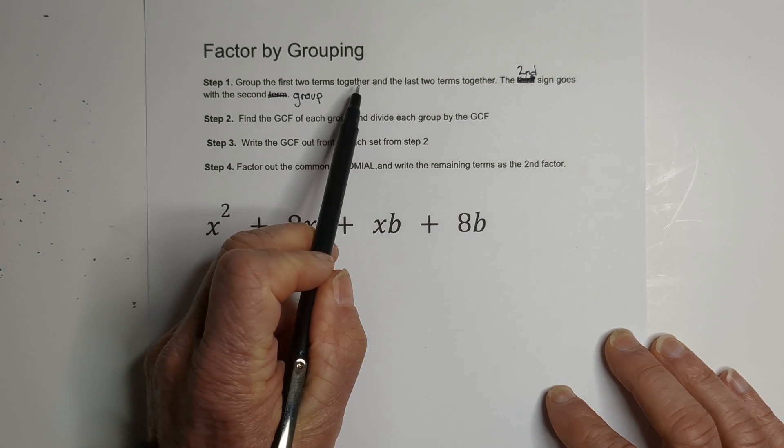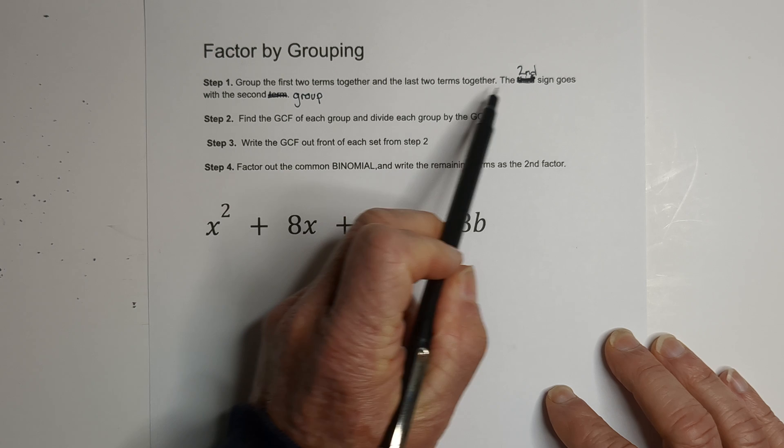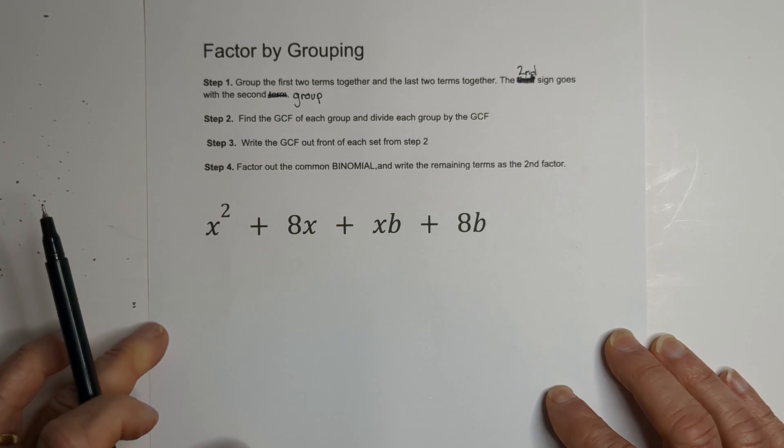but I think once you see it worked out, it's really not that complicated. First, you're going to group the first two terms together and the last two terms together. And the second sign goes with the second group.